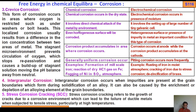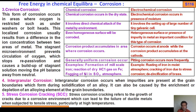In chemical corrosion, even a homogeneous surface will be corroded. For electrochemical corrosion, a heterogeneous surface or presence of impurity in metal is an important condition. Corrosion product accumulates in the area where corrosion occurs. In chemical corrosion, the corrosion occurs at the anode while the corrosion product accumulates at the cathode. Generally, uniform corrosion occurs in case of chemical corrosion, whereas pitting corrosion occurs more frequently in case of electrochemical corrosion.